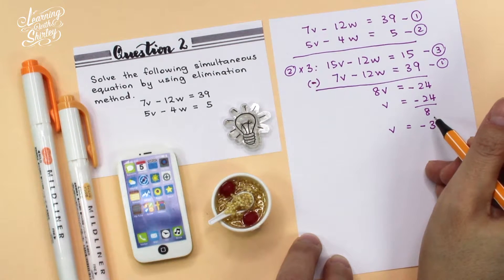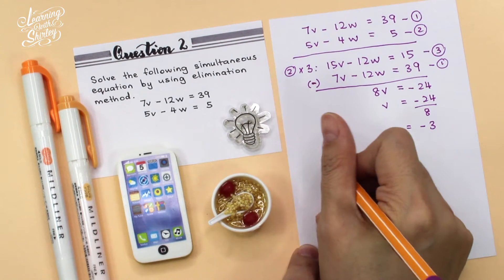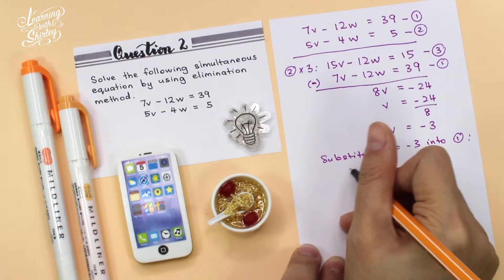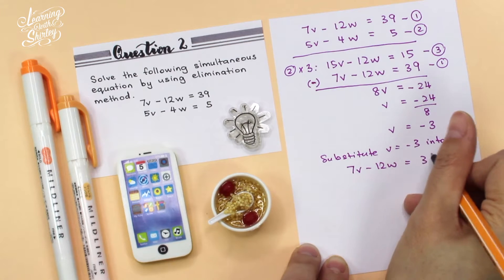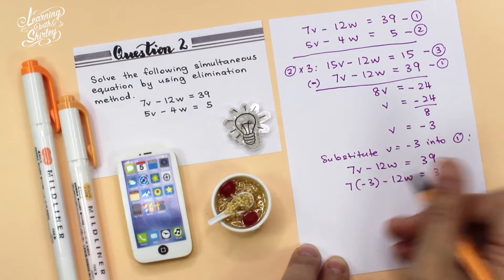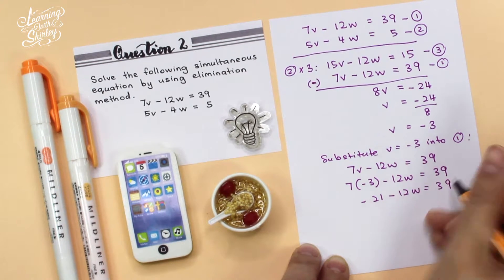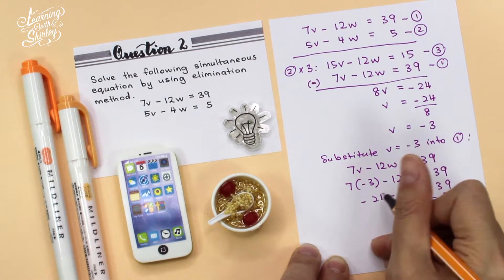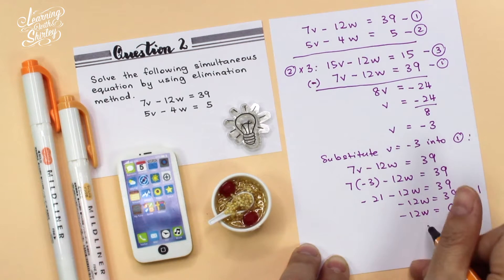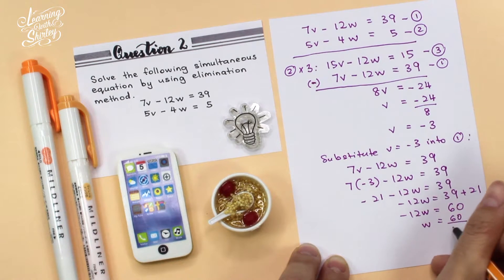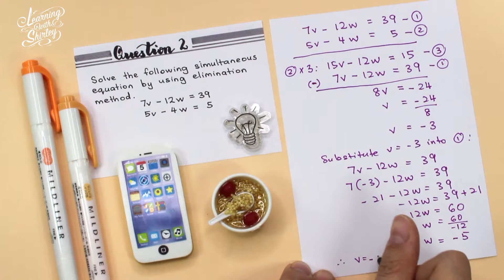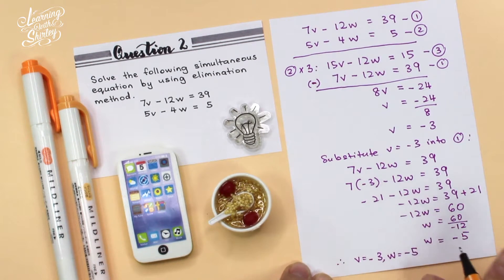After that, we find the value of w by substituting v equals negative 3 into equation 1. So 7 times negative 3 minus 12w equals 39, which gives negative 21 minus 12w equals 39. Negative 21 shifts over to become plus 21, so negative 12w equals 60, and w equals 60 divided by negative 12, giving w equal to negative 5. Therefore v equals negative 3 and w equals negative 5. That's the final answer.